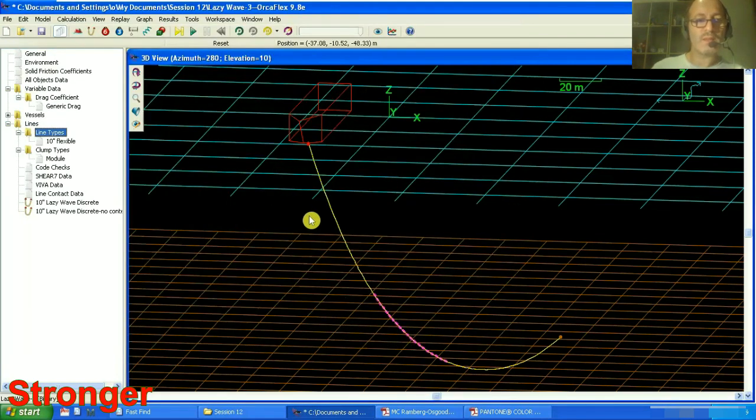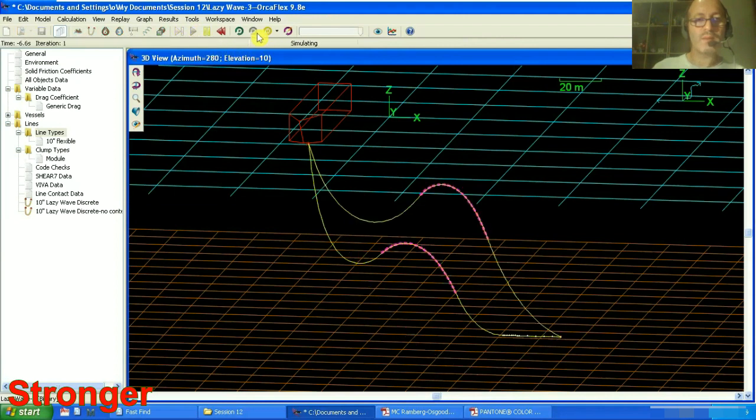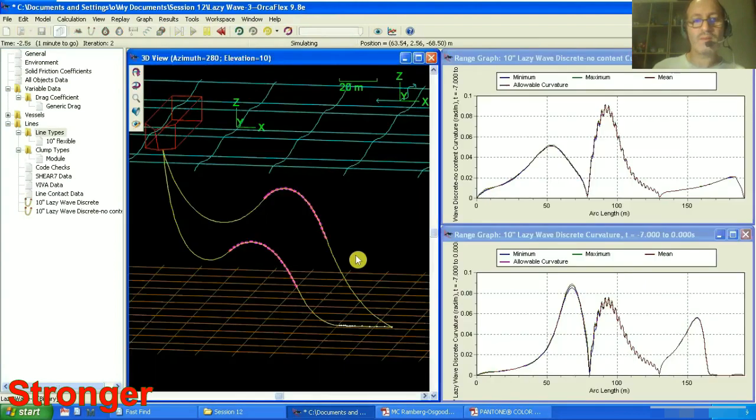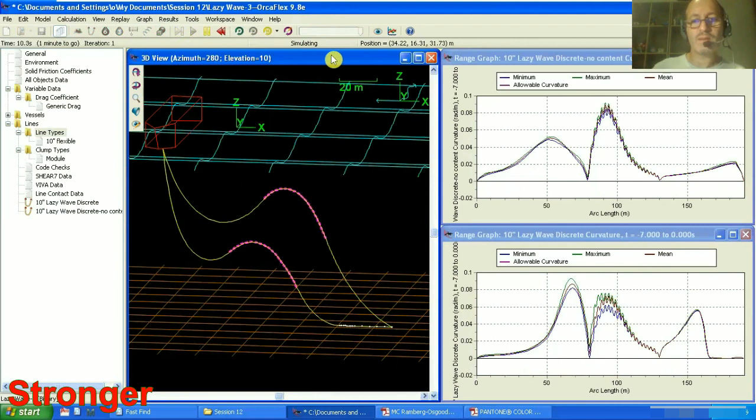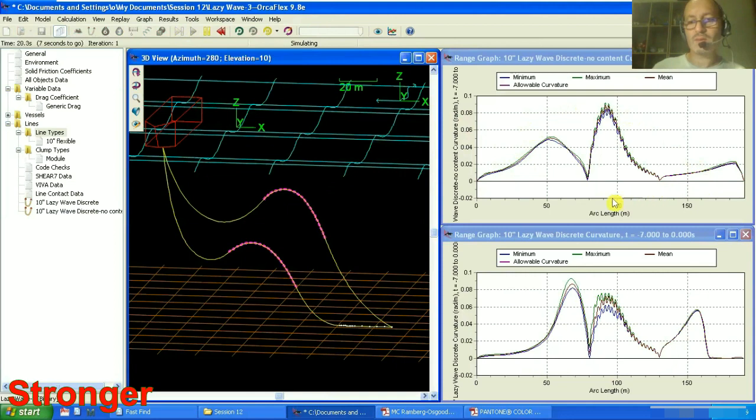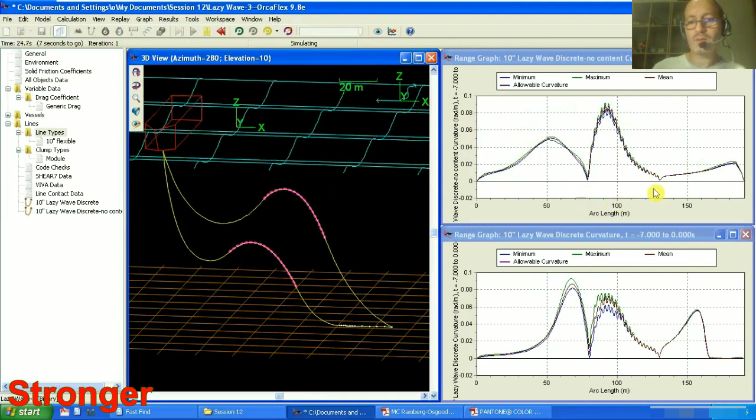Now our flexible riser with variable drag coefficient is ready for running. We just press on dynamic analysis button. At the same time, we can open the workspace to see the graphs, how it's simulating, and we will see how the progress is.